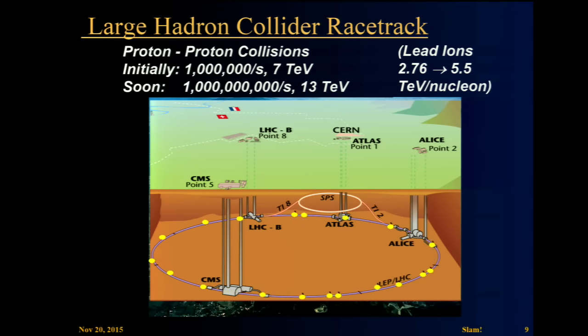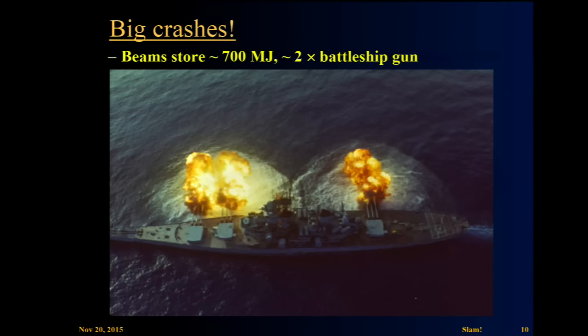It's a pretty cool machine. We do, initially, we started out with a million events per second at 7 TeV, and then we doubled the energy, and we hope to get up to a billion per second. And very soon, we're actually colliding not protons, but lead ions, which make that big splash on the first slide that I showed you. So this is the highest energy machine in the world. The beam stores as much energy as 700 megajoules, which is like two battleship guns going off at the same time. That's big crashes, right? Kind of fun, too.